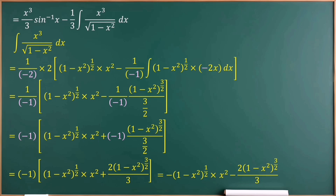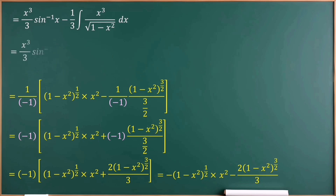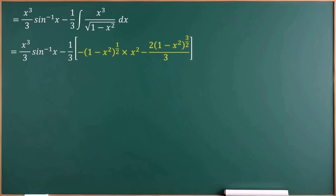Let's substitute this value back into our first integral answer. After removing the brackets, the final answer is: x cubed over 3 times sin inverse x, plus (1 minus x squared) to the power of one half times x squared over 3, plus 2 times (1 minus x squared) to the power of 3 over 2 over 9.